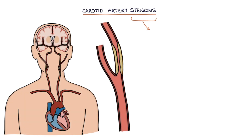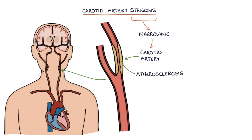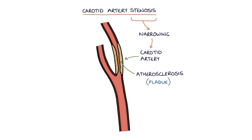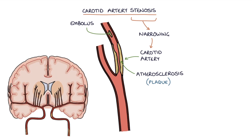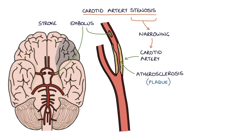Carotid artery stenosis refers to narrowing of the carotid arteries in the neck, usually secondary to atherosclerosis. Plaques build up in the carotid arteries reducing the diameter of the lumen. There is a risk of parts of the plaque breaking away and becoming an embolus, traveling to the brain and causing an embolic stroke.